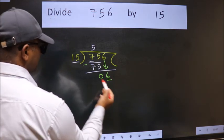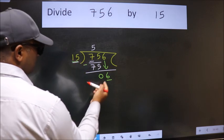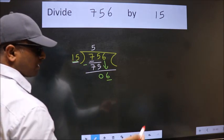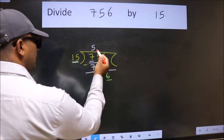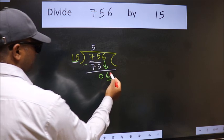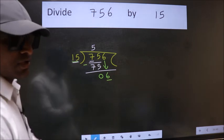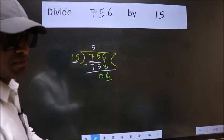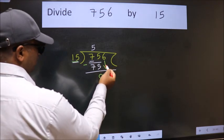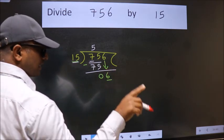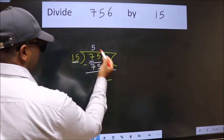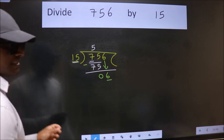Here we have 6. Here 15. 6 is smaller than 15. So what many do is they directly put dot, take 0, which is wrong. Why is it wrong? Because just now you brought this number down and in the same step you want to put dot, take 0, which is wrong.